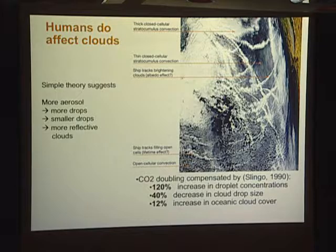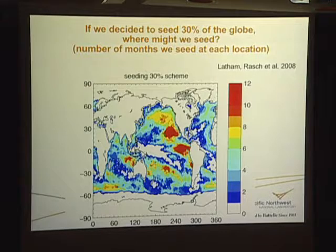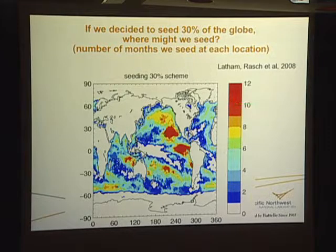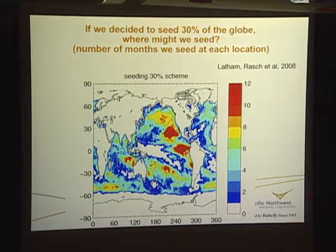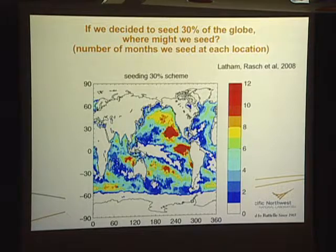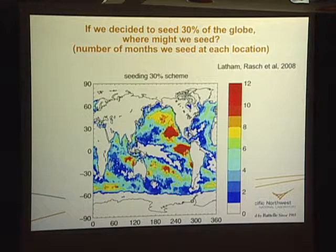Graham talked a lot about ship tracks and the role of open and closed cellular convection, so I won't spend much time on it. This figure was in my mind when we were having our conversation about the areas most susceptible to geoengineering. This was from a study I did a while ago with John Latham, and the assessment of where we might seed was done by a postdoc of mine. The marine stratocumulus regions were identified as the most natural for a geoengineering-type activity.